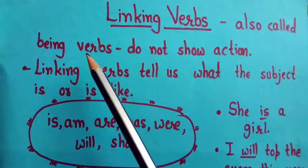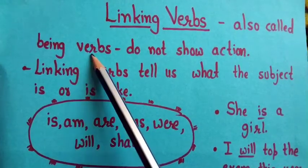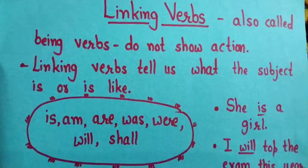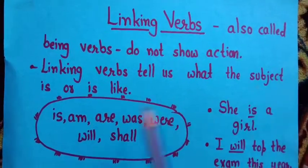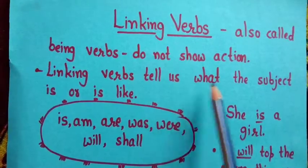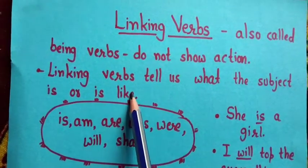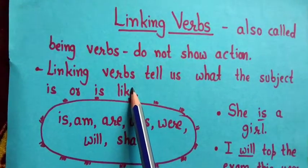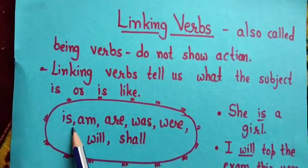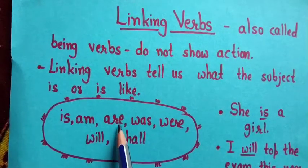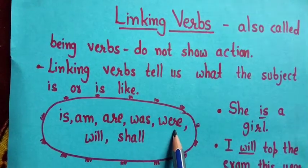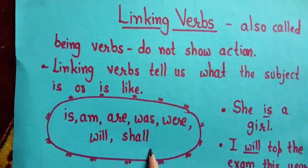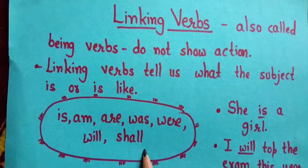Linking verbs are also called being verbs. These verbs do not show any action. Linking verbs tell us what the subject is or is like. Here are some verbs that are called linking verbs: is, am, are, was, were, will, shall. These are being verbs or linking verbs.